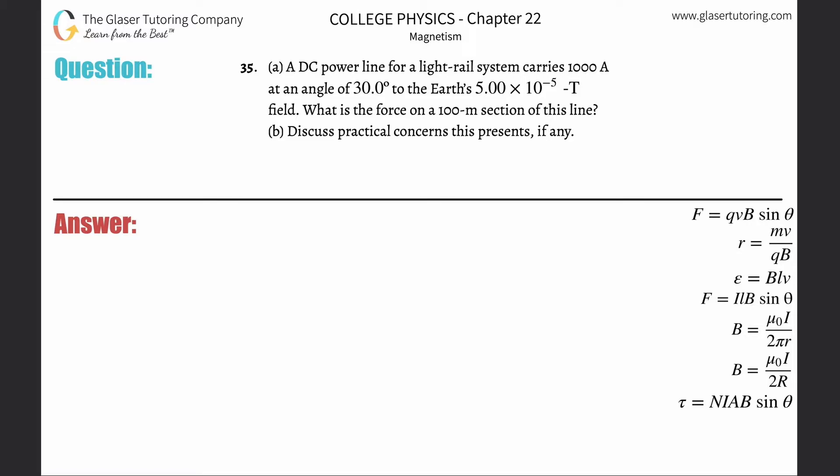Number 35: A DC power line for a light rail system carries 1000 amps of current at an angle of 30 degrees to the Earth's 5×10^-5 tesla field. What is the force on a 100 meter section of this line? Anytime you're talking about current, magnetic field, and force on this current, you have to use this formula.